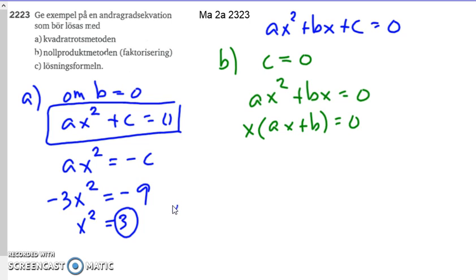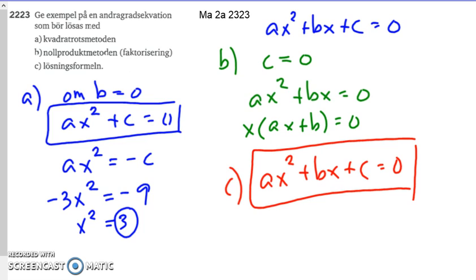Method C: You can solve all equations with the general formula. But remember: use the square root method when b = 0, so you only see x² and a constant. Use the zero product method when c = 0, so you only see x² and x. And if you see all three terms, ax² + bx + c, then you can use the quadratic formula.